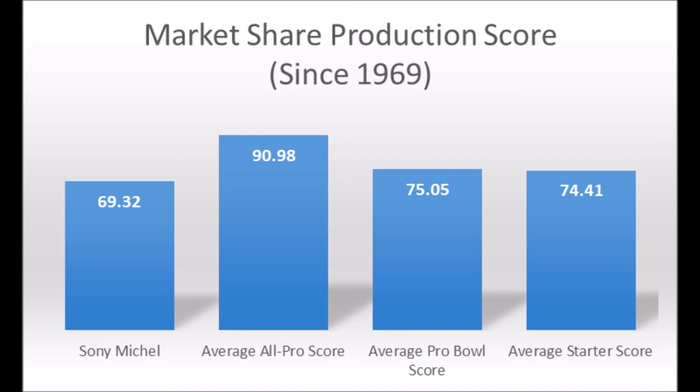Sonny Michel, based on his market share data and his production profile, looks like a pro bowler to starter caliber player, which is pretty good. Once the combine comes around, we'll have more information about athleticism and those other sort of things. But for right now, Sonny Michel looks pretty good. If you think Sonny Michel is a potential above-average running back at the NFL level, so far based on production metrics, he looks to be a guy that could do that. That's pretty much the down-low in terms of Sonny Michel's production data.